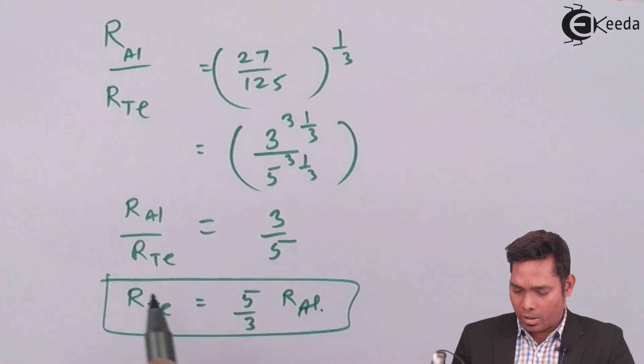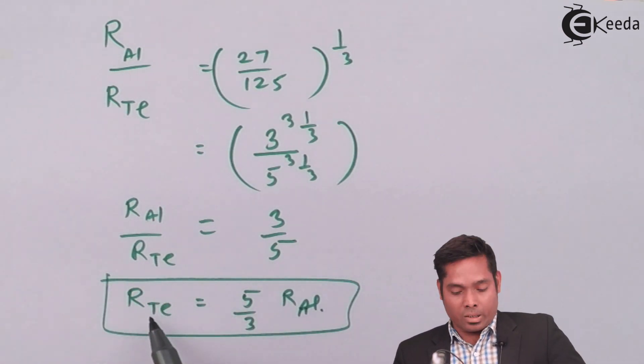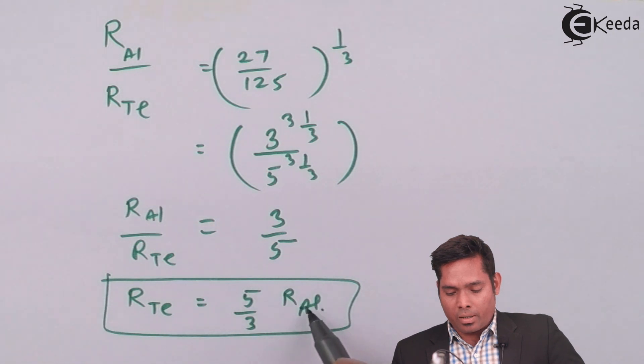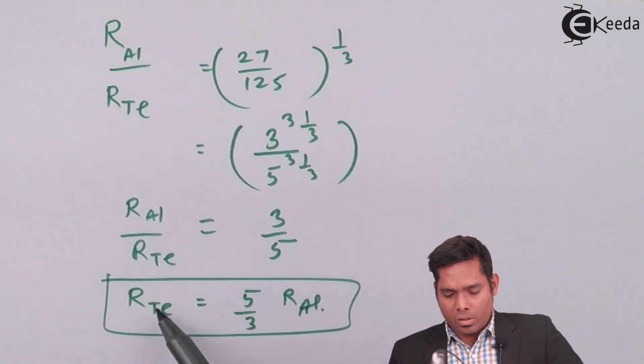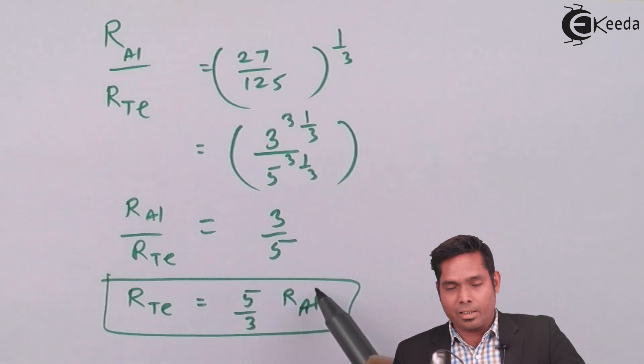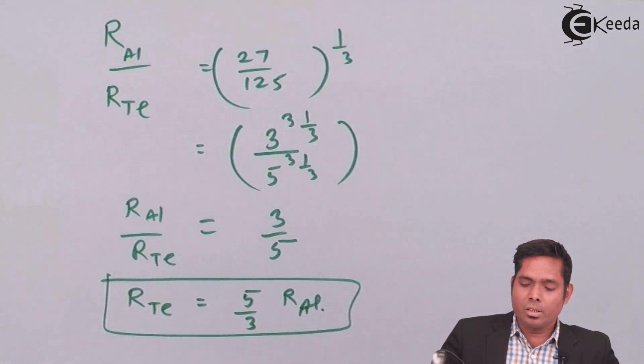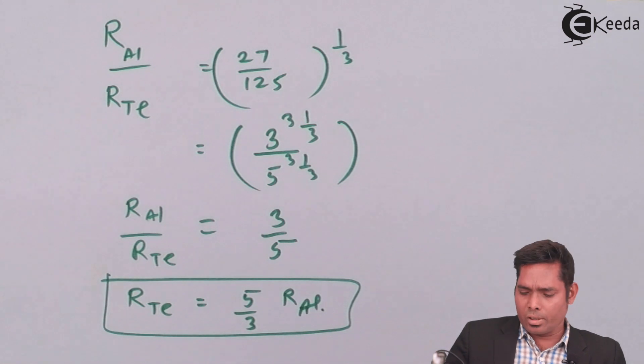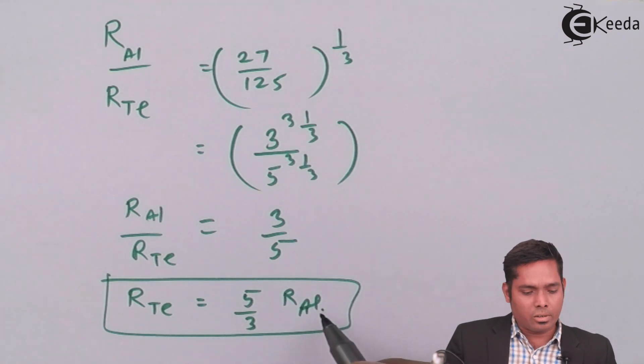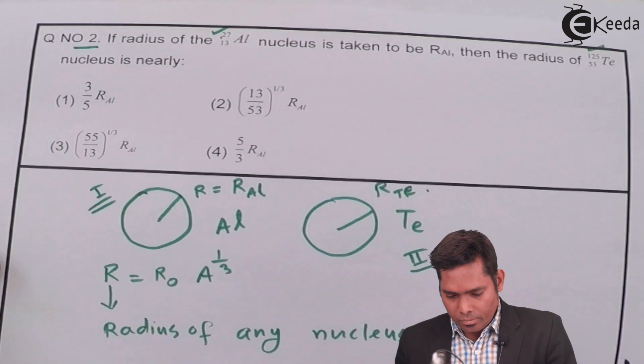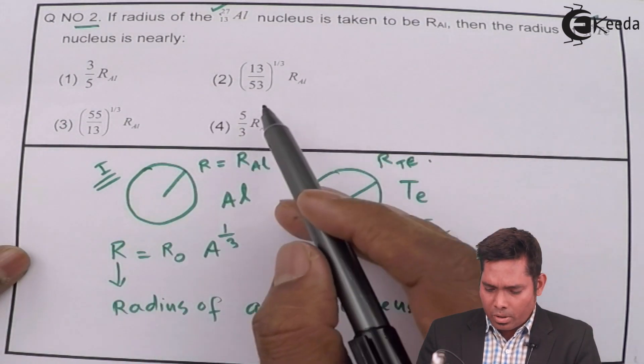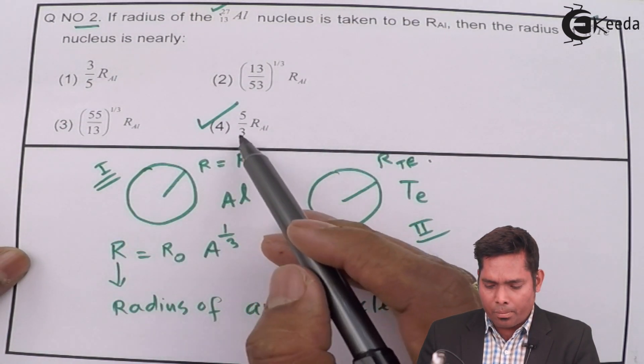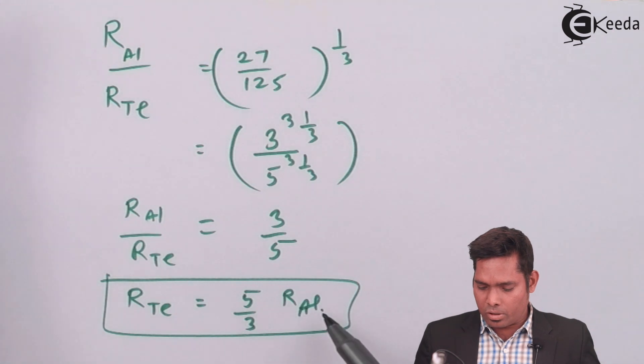This is what is the answer of R_Te in terms of R_AL. So this is 5 by 3 times larger than the radius of aluminum because as the mass number increases, the radius will obviously increase. And this should be the answer to this question. If I see the option, then option number 4 is correct, 5 by 3 times R_AL. So this is the answer.